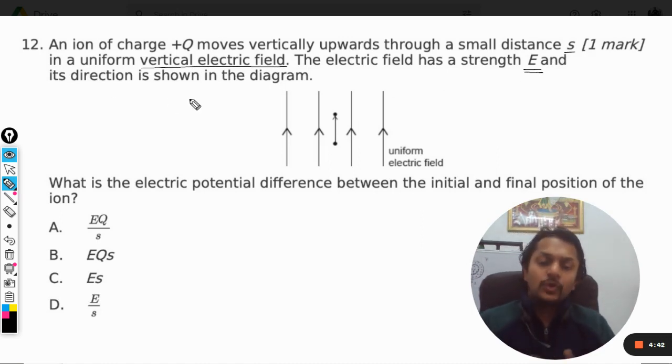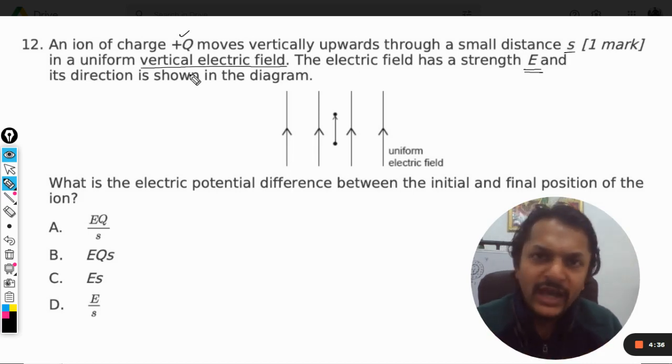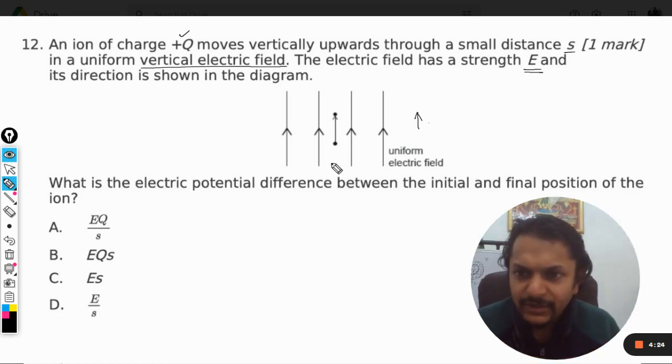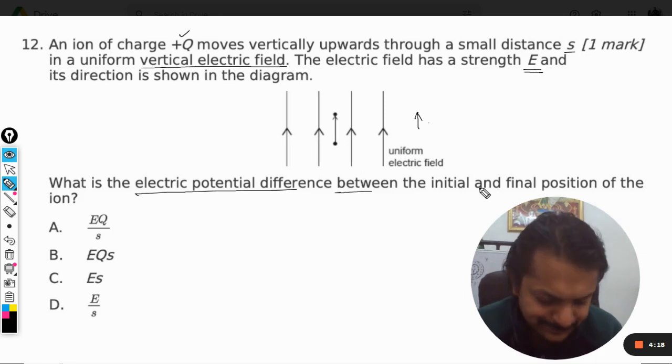Okay, so the charge is positive, so it will be experiencing a force that would be having the same direction as that of the electric field. So it is experiencing a force in the upward direction. That is why obviously the charge will start moving upward, and that is what is happening. What is the electric potential difference between the initial and the final position of the ion?